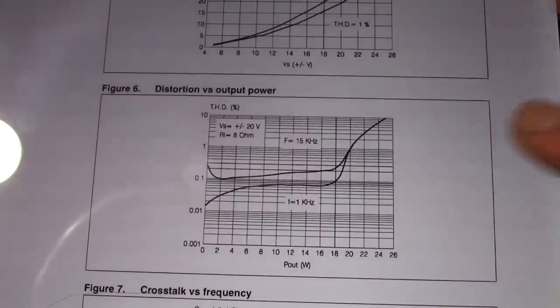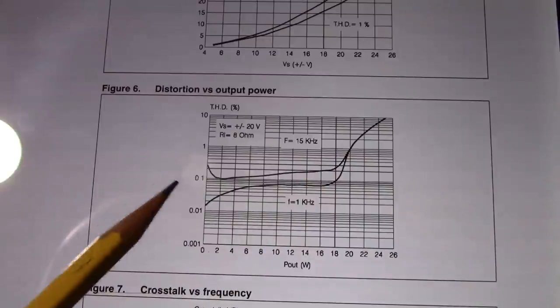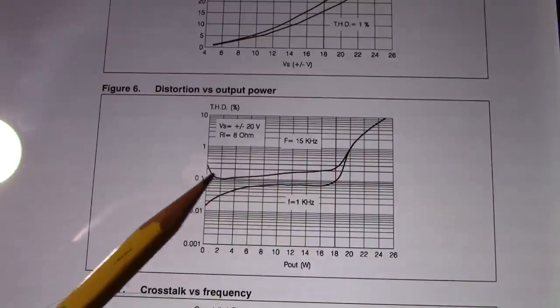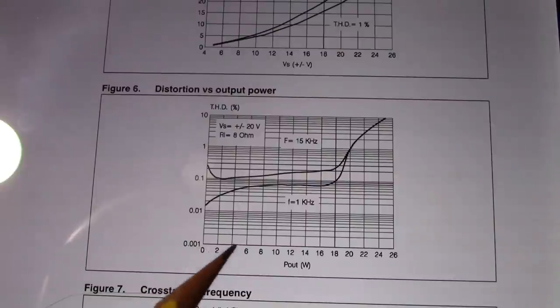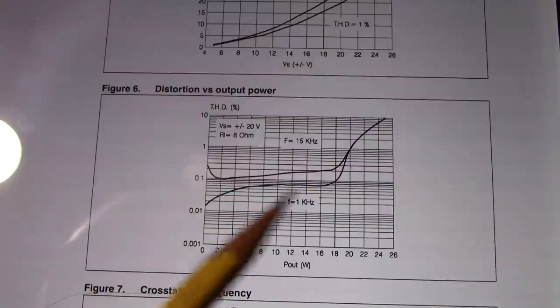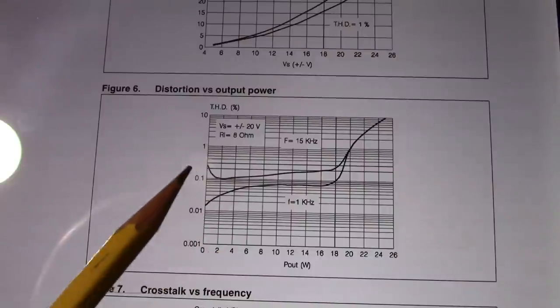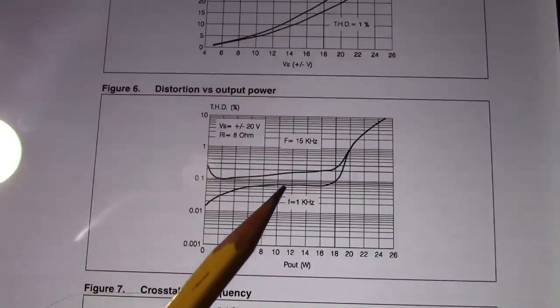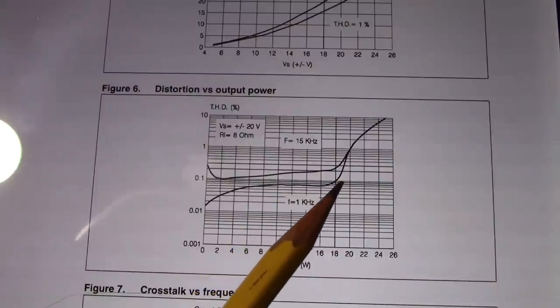Distortion, not too bad. The all important one kilohertz line here. At your normal listening levels, which would be in the low wattage area, it's very low, dipping down to 0.1. I'm sorry, this is the one kilohertz line. It's actually dipping down well below 0.1. And then it starts to hit clipping, where it goes above 0.1.